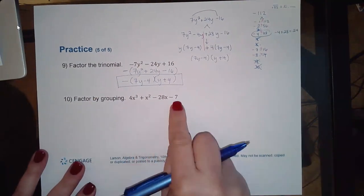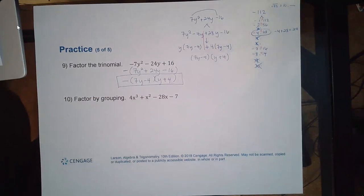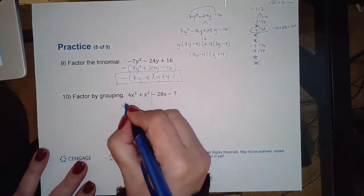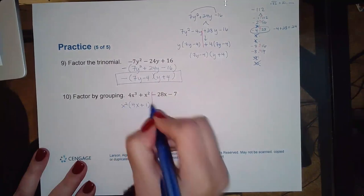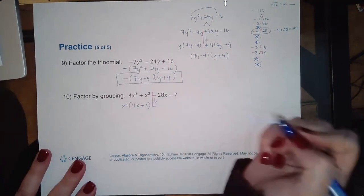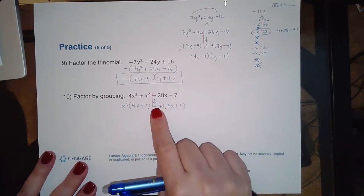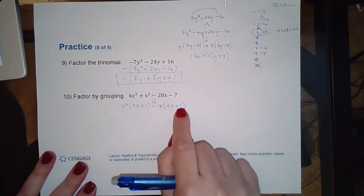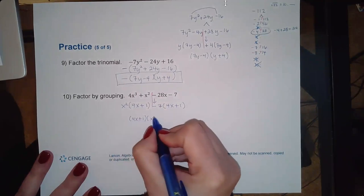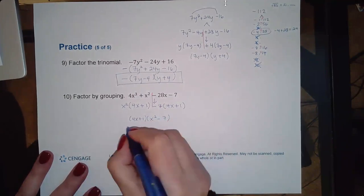Tenth example: 4x³ + x² - 28x - 7. No GCF. Use grouping directly. Left group 4x³ + x² has x² in common: x²(4x + 1). Must bring down the minus. Right group -28x - 7 has 7 in common: -7(4x + 1). Both sides share (4x + 1). Remaining: x² and -7, giving (4x + 1)(x² - 7). Since x² - 7 is not a perfect square, this is the final answer.